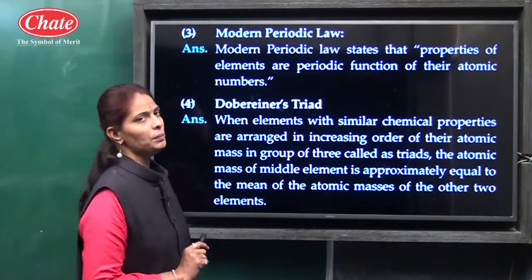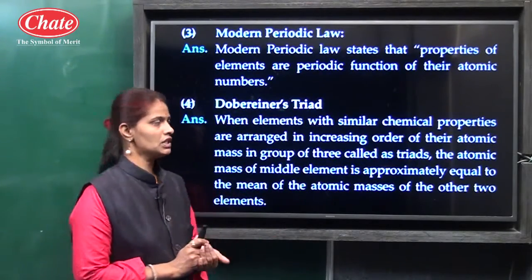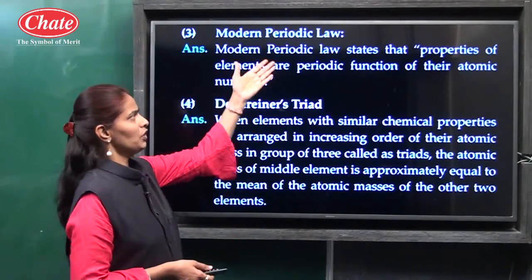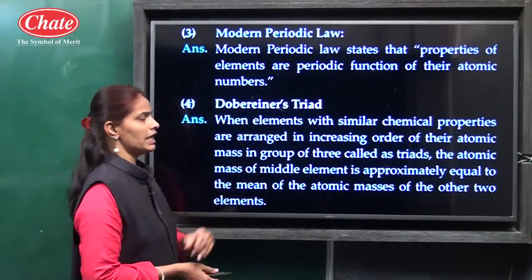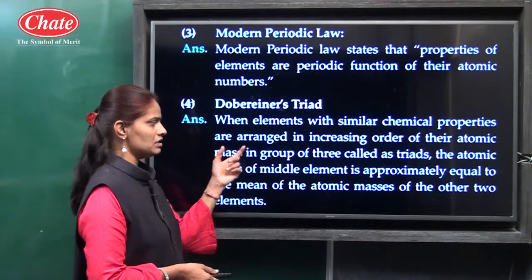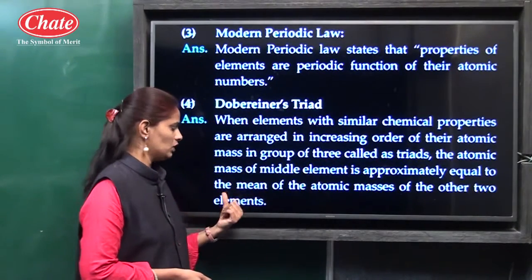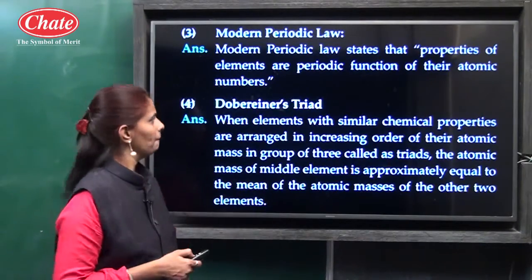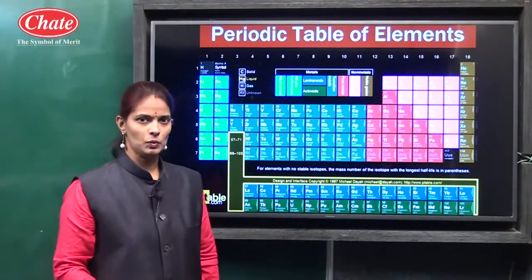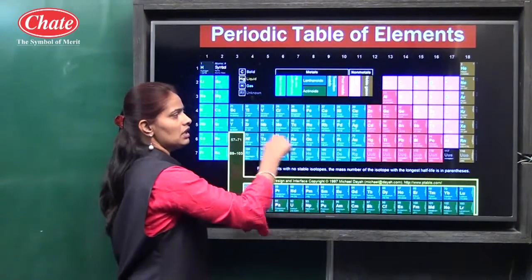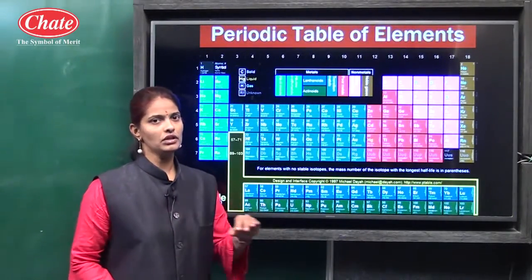Then the next term — modern periodic law: after Moseley suggested that the atomic number is the reason for periodicity, modern periodic law states that properties of elements are the periodic function of their atomic number. Dobereiner's triads: when elements with similar chemical properties are arranged in increasing order of their atomic mass in groups of three called triads, the atomic mass of the middle element is approximately equal to the mean of the atomic masses of the other two elements. The modern periodic table has 18 vertical columns called groups, and 7 horizontal rows called periods — meaning 18 groups and 7 periods.